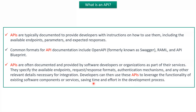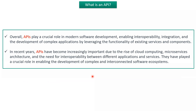Developers can use these APIs to leverage the functionality of existing software components or services, which saves time and effort in the development process. Overall, APIs play a crucial role in modern software development, enabling interoperability, integration, and the development of complex applications by leveraging the functionality of existing services and components.